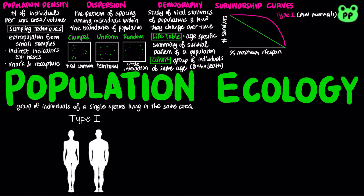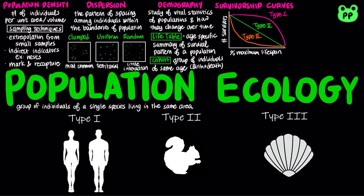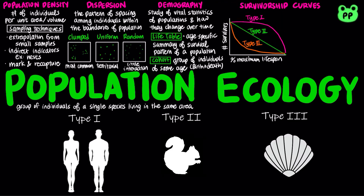In a type 2 survivorship curve, the death rate is constant over the organism's lifespan — an example would be a squirrel. Type 3 survivorship curve involves high death rates for the young, then a slower death rate for survivors — an example would be clams.